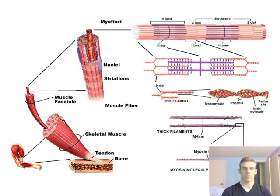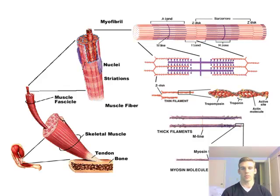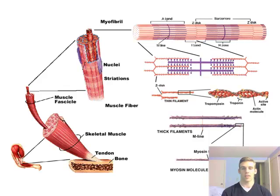The first thing we'll look at is the structure of muscle. You can see in the bottom left of your screen we have a whole skeletal muscle. We can break this down into smaller parts: first a muscle fascicle, which is composed of multiple muscle fibers. Within each muscle fiber there are myofibrils, shown at the top of the screen, and a myofibril is composed of many sarcomeres lined up in series — meaning many sarcomeres lined up right next to each other in a line.